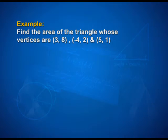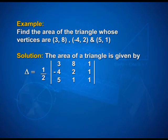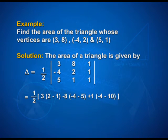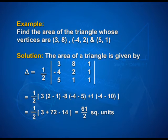Let us solve a problem using the above formula. Find the area of the triangle whose vertices are (3, 8), (-4, 2) and (5, 1). For the solution, Area = ½ · |det([3, 8, 1; -4, 2, 1; 5, 1, 1])|. Expanding: ½ · |3·(2-1) - 8·(-4-5) + 1·(-4-10)| = ½ · |3 + 72 - 14| = 61/2 square units.